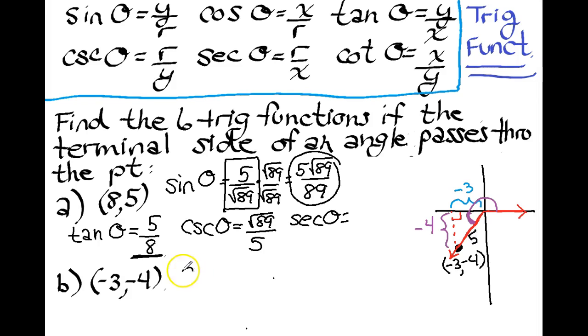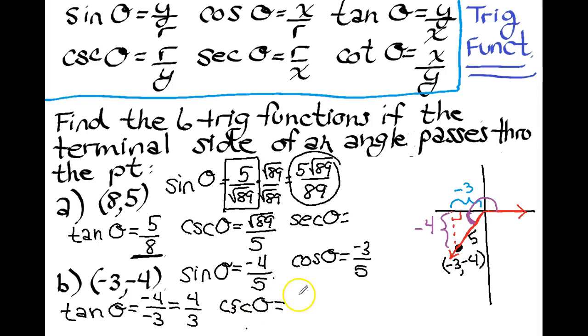So the sine of theta for this one is going to be y over our r value. So it's a negative 4 over 5. Our cosine of theta is going to be our x over r, which is negative 3 over 5. Now we have our tangent of theta is going to be y over x. So we have a negative 4 over a negative 3, which gives us a positive 4 thirds. And then our other values are just going to be the reciprocals. So we have our cosecant of theta is the reciprocal of sine. So it's going to be a negative 5 fourths. Our secant of theta is going to be a negative 5 thirds. And then our cotangent of theta is going to be 3 fourths.